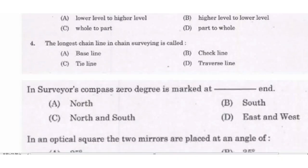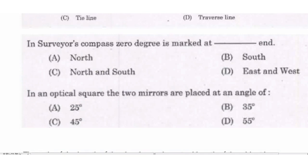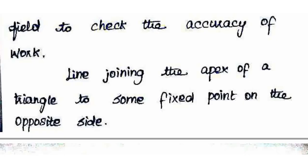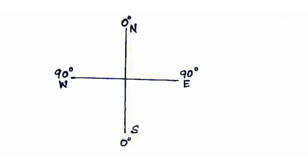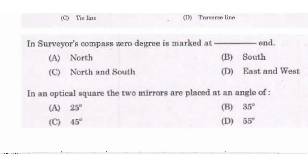Next question: in the surveyor's compass, zero degrees is marked at which end? The answer is Option C: North and South. In the surveyor's compass, North is zero degrees, South is zero degrees, and East and West are marked at 90 degrees. The surveyor's compass follows the reduced bearing system.